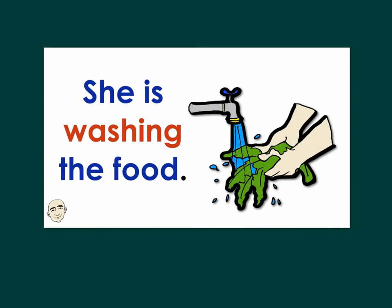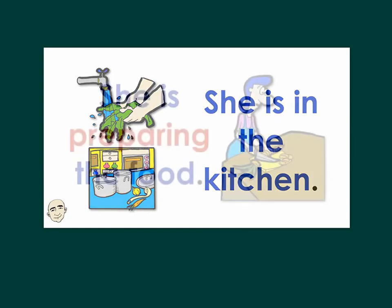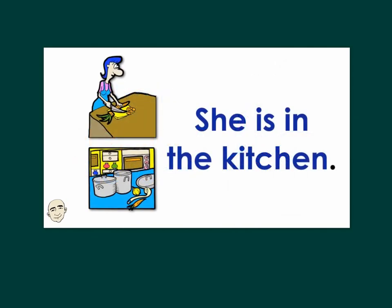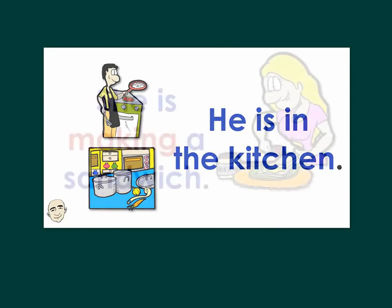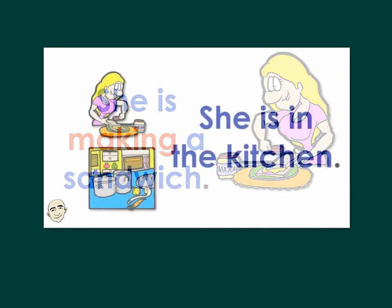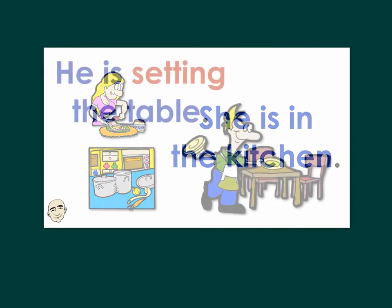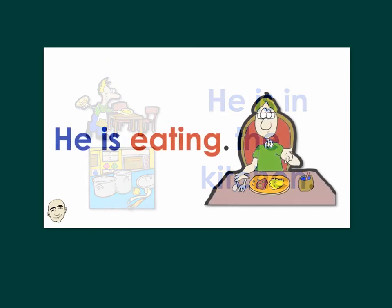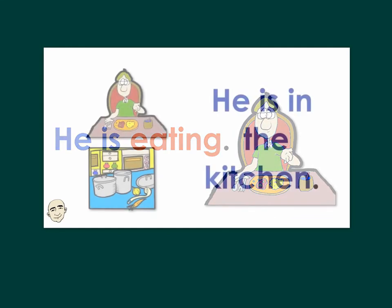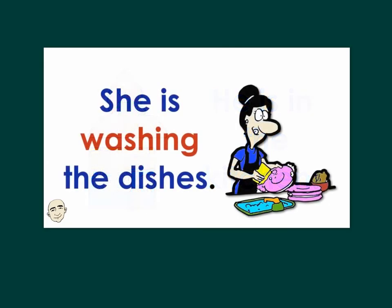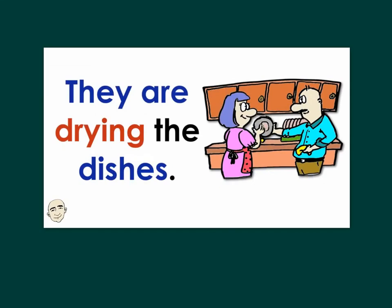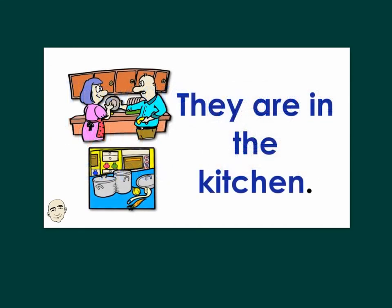She is washing the food. She is in the kitchen. She is preparing the food. She is in the kitchen. He is cooking. He is in the kitchen. She is making a sandwich. She is in the kitchen. He is setting the table. He is in the kitchen. He is eating. He is in the kitchen. She is washing the dishes. She is in the kitchen. They are drying the dishes. They are in the kitchen.